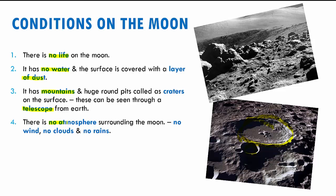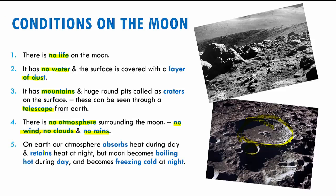The moon has no atmosphere surrounding itself like the earth does. So because it has no atmosphere, it also has no wind, no clouds, and no rain at all. The function of the atmosphere on earth is that during the day it absorbs the heat and makes sure the earth doesn't become very hot, and during the night it retains heat to make sure the earth doesn't freeze. But since the moon does not have an atmosphere, it becomes boiling hot during the day and freezing cold during the night.